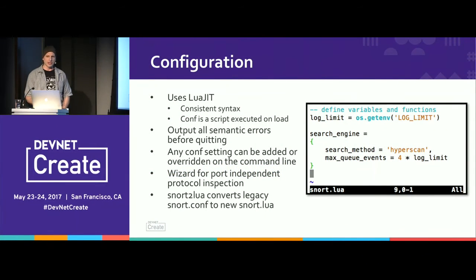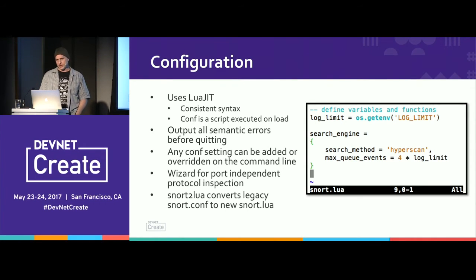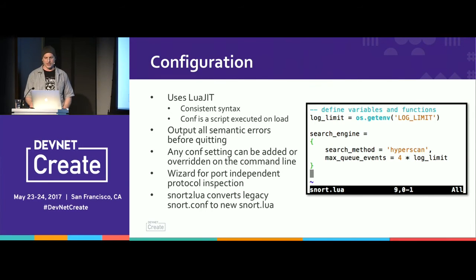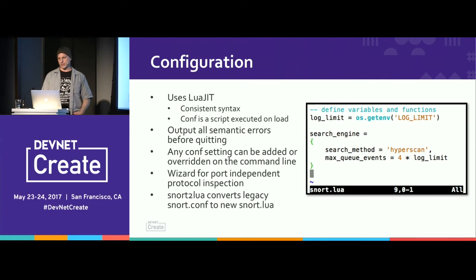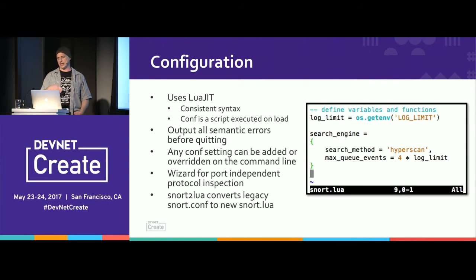Moving on to the underbelly, we'll start with the configuration. The configuration uses LuaJIT, which means we have consistent syntax and the configuration is a script that executes when loaded — it's a live thing that can calculate values and so on. Snort++ also outputs all semantic errors before it fails, and any configuration setting can be overwritten on the command line using dash-dash-lua, so you can run your config one way then change it by adding a command line option and run it again.